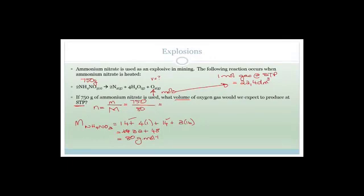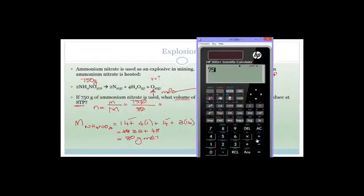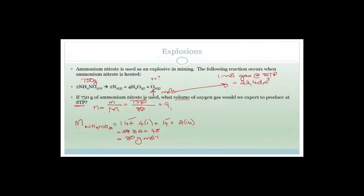So therefore we can say that the number of moles that we were actually given was 750 divided by 80, or 75 divided by 8, which is 9.375, 9.38 moles. That's 9.38 moles.